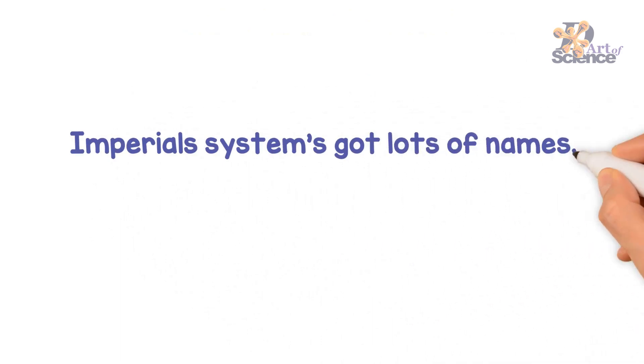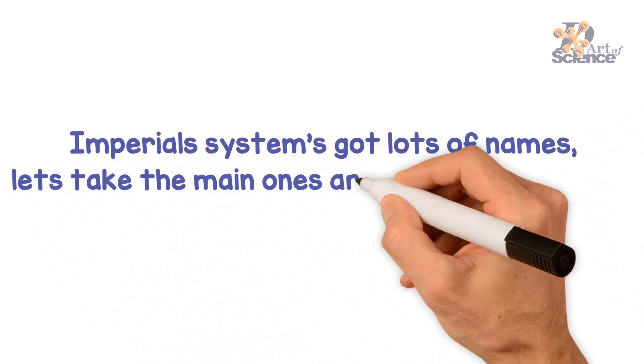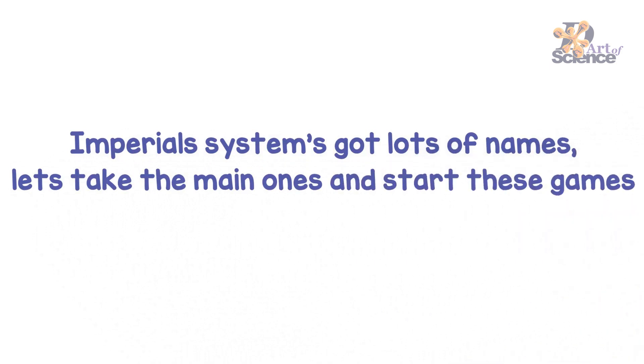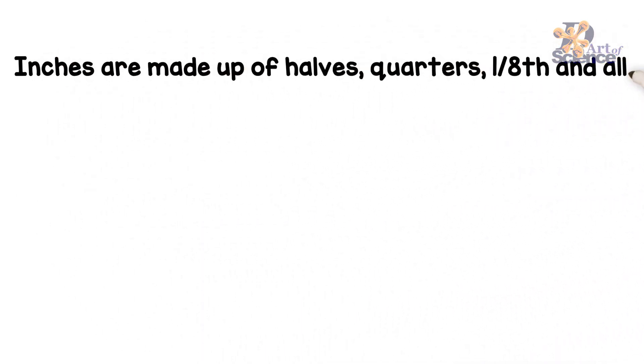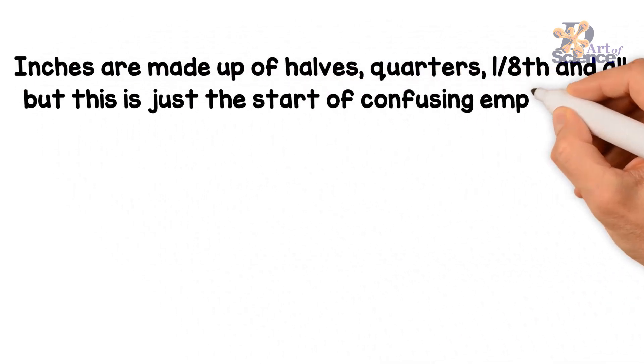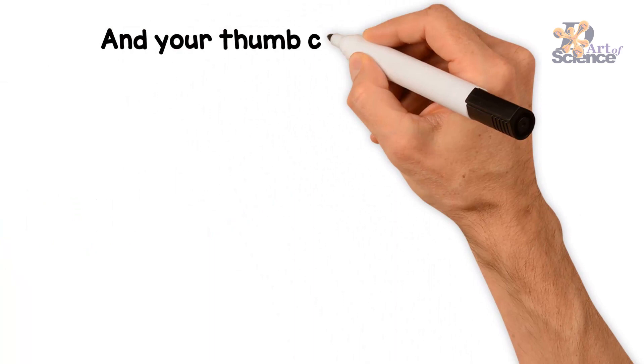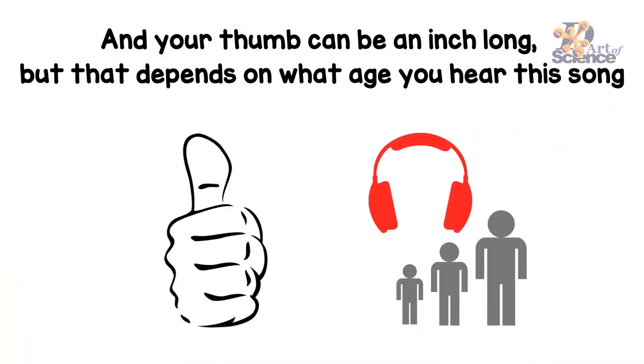It's the Infiyami Missy Meki song. Imperial Systems got lots of names. Let's take the main ones and start these games. Inches are made up halves, quarters, eighth and all. But this is just the start of confusing them all. And your thumb can be an inch long. But that depends on what age you hear the song.